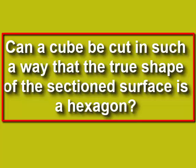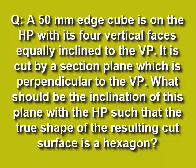In this video, let us find out: can a cube be cut in such a way that the true shape of the sectioned surface is a hexagon? A 50mm edge cube is on the HP and its 4 vertical faces equally inclined to the VP. It is cut by a sectioning plane which is perpendicular to the VP. What should be the inclination of this plane with the HP such that the true shape of the section is a hexagon?